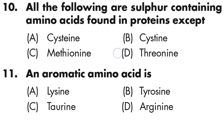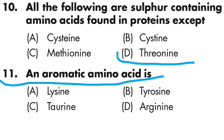Question number eleven: an aromatic amino acid is — Option A is lysine, Option B is tyrosine, Option C is taurine, Option D is arginine. The correct answer is Option B — tyrosine is the aromatic amino acid.